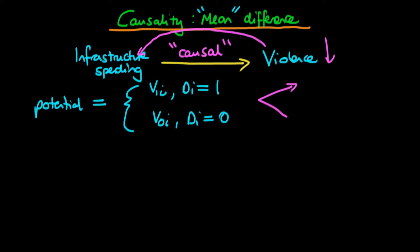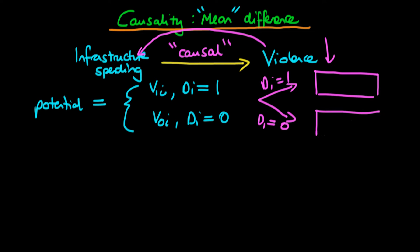The initial decision taken by some governmental agency is whether to provide a given district with infrastructure spending — in other words, di is equal to 1 — or whether not to provide infrastructure spending — in other words, di is equal to 0.